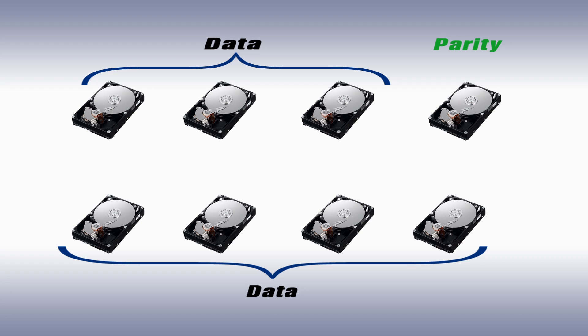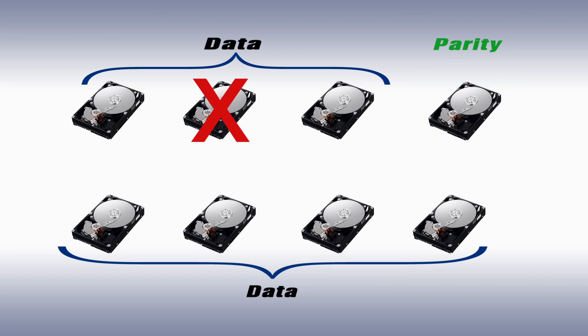All erasure codes break data into n fragments, then transform these fragments into n plus one or more pieces. The key benefit: only n fragments are needed to reconstruct the data. Add more fragments to get any level of redundancy. For example, in a 7 plus 1 RAID 5, the data is broken into 8 fragments, one of which is parity, and any 7 of the 8 fragments recreates your data.